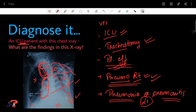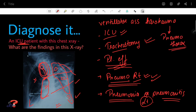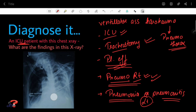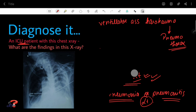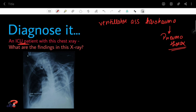The final diagnosis is ventilator-associated barotrauma that has caused pneumothorax in the patient. Now let me discuss some important points about this diagnosis — ventilator-associated barotrauma causing pneumothorax.